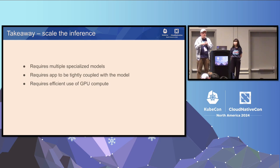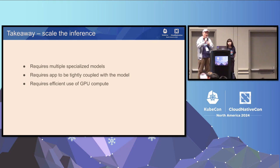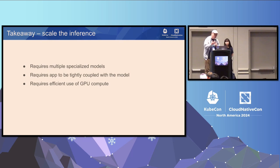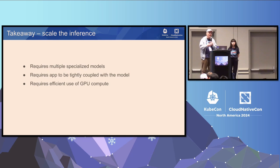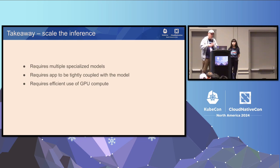For a generative AI system, you want models fine-tuned and trained in slightly different ways so they give different answers. Then you have those models cross-check each other and vote on which translation to use for each sentence. The takeaway is that for a generative AI system, you really need multiple specialized models, and applications need to be tightly coupled with those models. An application written specifically for LLaMA 3.2 won't necessarily work for LLaMA 3.1 because the prompt structure is different, or it could work for Qwen 2.5, a Chinese-trained model that understands that language much better.